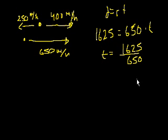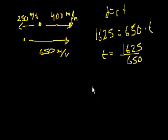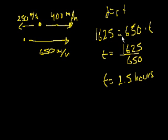See if we can simplify that at all. We could divide the top and the bottom by 25. Let me just get my calculator. So 1625 divided by 650 is equal to 2.5. So time, and we were doing everything in miles per hour, so time is going to be equal to 2.5 hours. That's choice A.